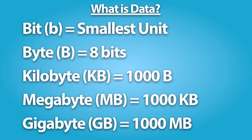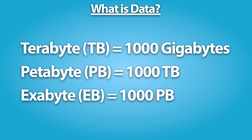A megabyte is 1,000 kilobytes, about a small book. A gigabyte is 1,000 megabytes, which represents 10 filing cabinets. A terabyte is 1,000 gigabytes — this is 3.6 billion photos, 300 hours of video, or 1,000 copies of the Encyclopedia Britannica.